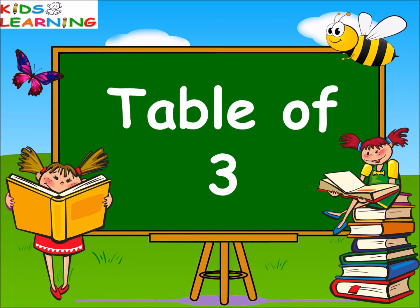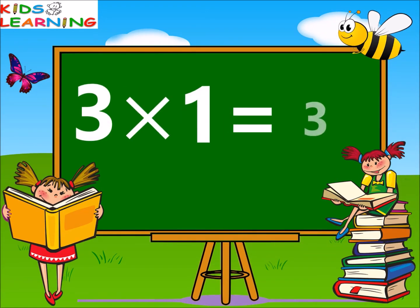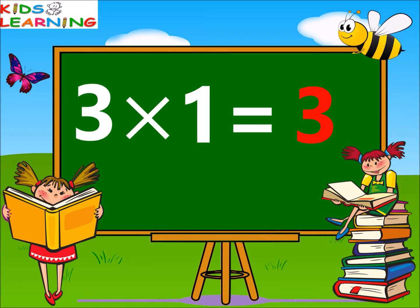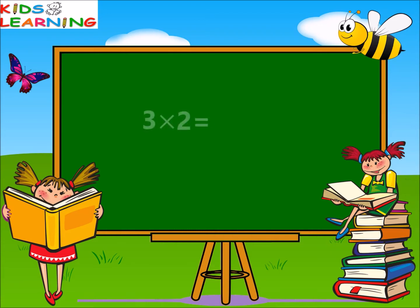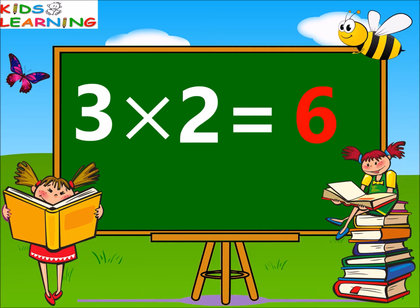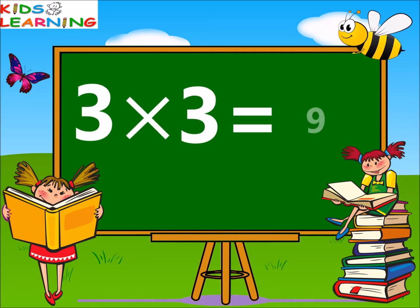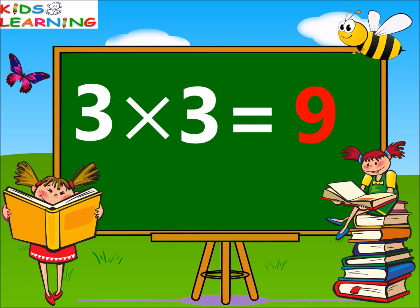Table of three. Three ones are three. Three twos are six. Three threes are nine.